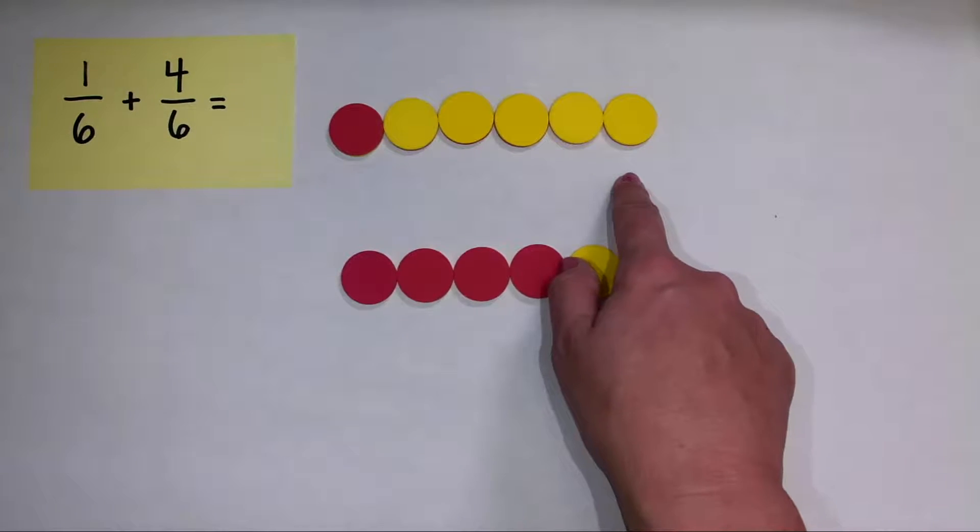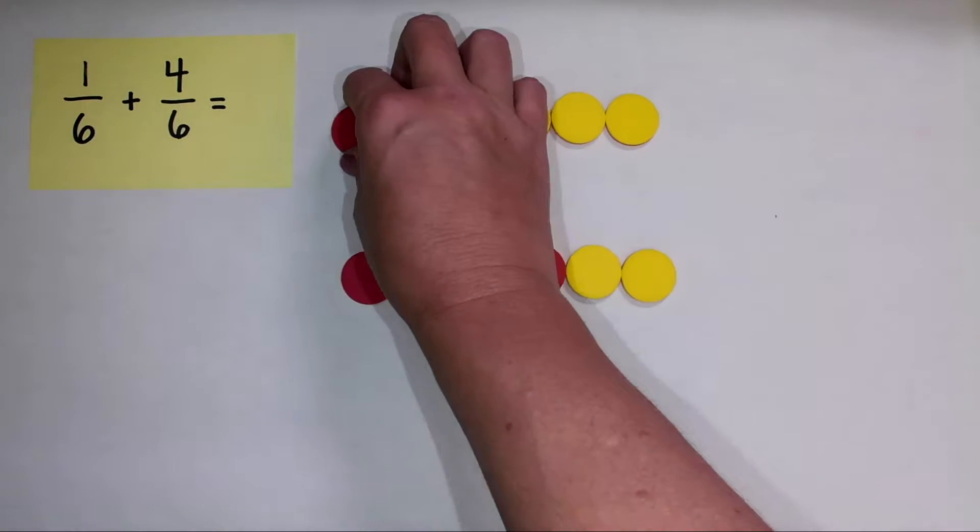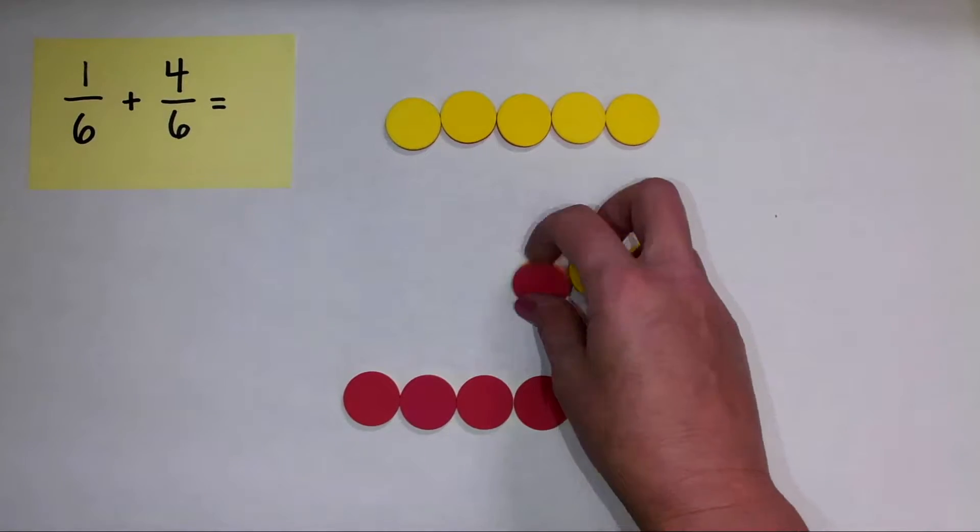But I'm still going to think about making groups of six. So I'm going to add those together, and I'll move them down here. All right, so let's see. I'm going to add the parts. One, two, three, four, five.